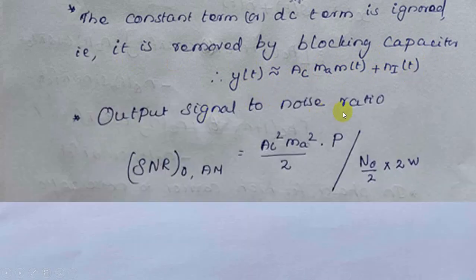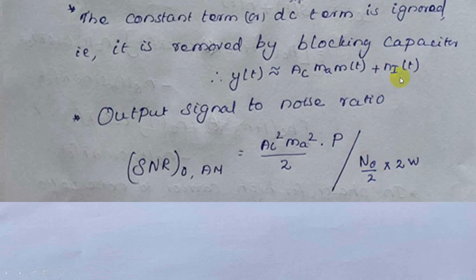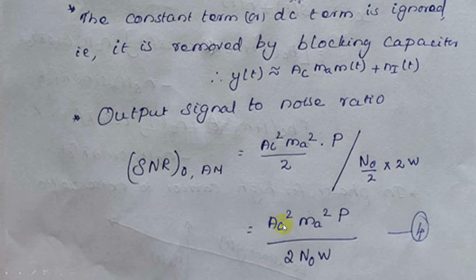To find the output signal to noise ratio, the average power of the signal is AC² × MA² × P / 2, where P is the average power of the message signal. The noise power is N0/2 × 2W = N0 × W. Therefore, the output signal to noise ratio is AC² × MA² × P / (2 × N0 × W).